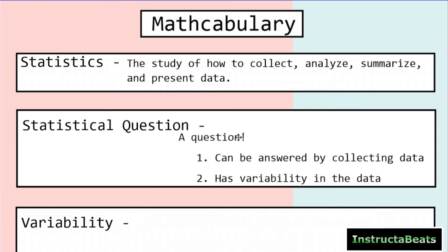You have to have data to collect. A statistical question is obviously a question, and it has to have two things: one, it can be answered by collecting data, and two, it has to have variability in the data — which leads us to our next vocabulary word.